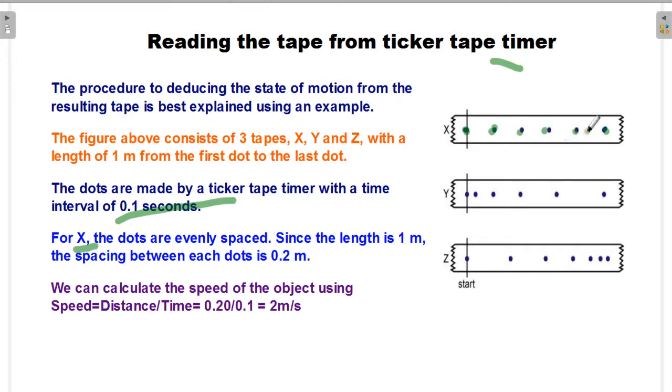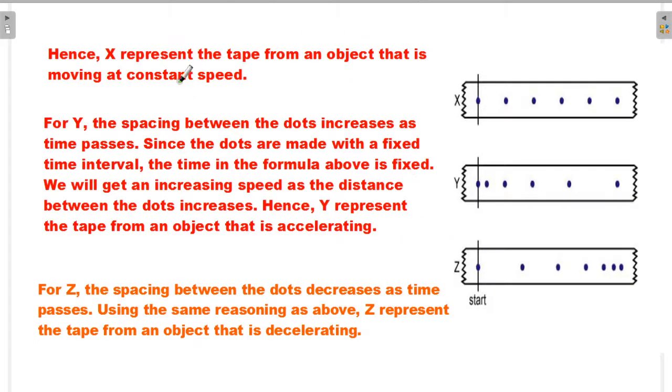For X, the dots are evenly spaced. Since the length is 1 meter, the spacing between each dot is 0.2 meters. We can calculate the speed of the object using speed equals distance divided by time: 0.2 meters divided by 0.1 seconds equals 2 meters per second.